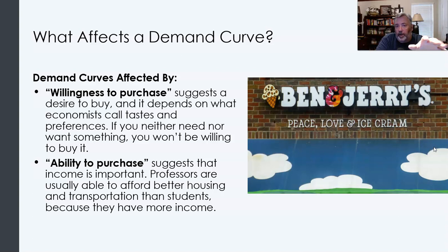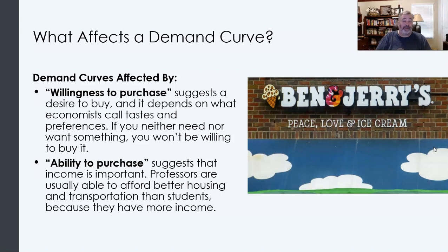E is expectations — consumer expectations. These typically revolve around two things: consumers' expectations about the price of a good and about their income. If they expect their income is going to increase next month, they may put off a purchase now in favor of buying it when they have more money, so demand may fall in the short term.